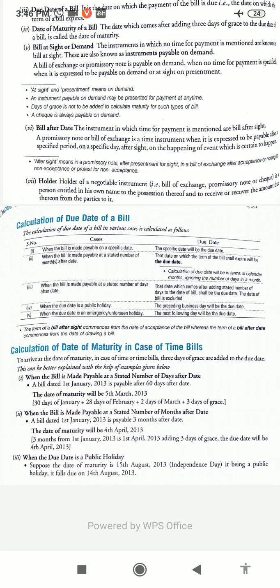Accommodation bill: when a bill is written with the intention of providing short-term financial help to the drawer, the drawee, or both, such a bill is called an accommodation bill. Proper presentation of the bill: the drawee is liable to pay the bill only on presentation of the bill on the due date, during working hours and at the place of usual business. Dishonor of bill: when the drawee fails to make payment of the bill properly presented by the payee on the due date, it is called dishonor of the bill.